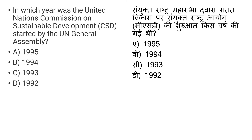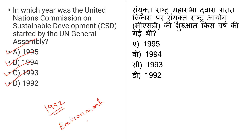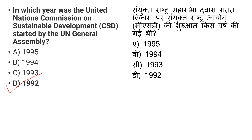The next question: In which year was the United Nations Commission on Sustainable Development started by the UN General Assembly? The options are 1995, 1994, 1993, and 1992. The United Nations Commission on Sustainable Development was established by the UN General Assembly in 1992, to ensure effective follow-up of the United Nations Conference on Environment and Development, also called the Earth Summit. The correct answer is option D, that is 1992.